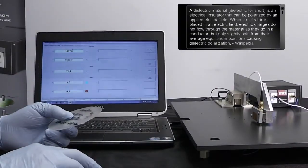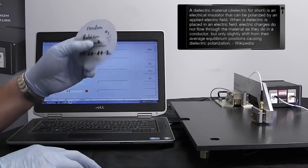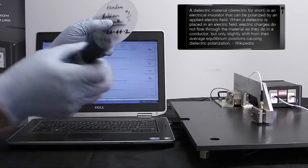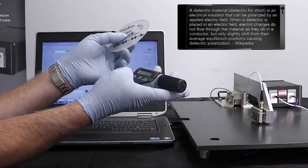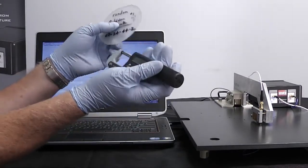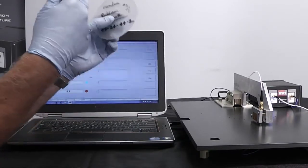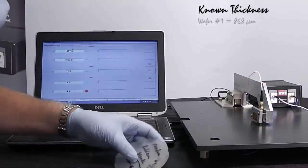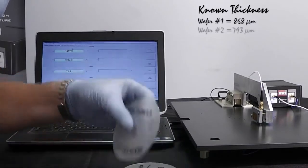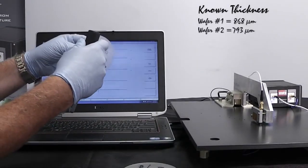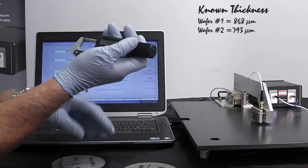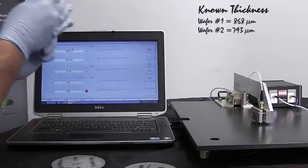After we get the program started up, what we want to do is calibrate to two known thicknesses on our sapphire wafers here. What we'll use is we have a micrometer here, I've identified two areas, one on this wafer right here where I've mic'd it and I've got 868 microns and I have a second wafer here, this one's 793 microns. And again, we figure that out by using a standard contact micrometer to do that.